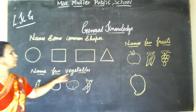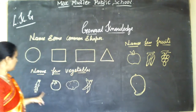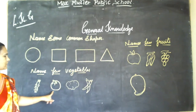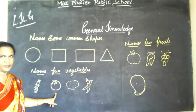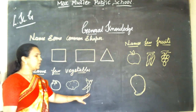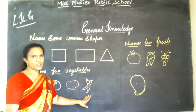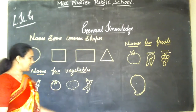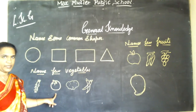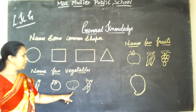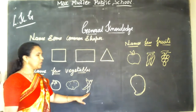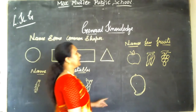Name few vegetables. Carrot. Tomato. Potato. Ladies finger. Carrot. Tomato. Potato. Ladies finger.